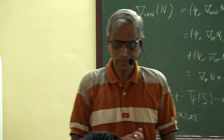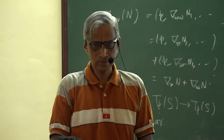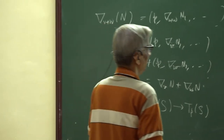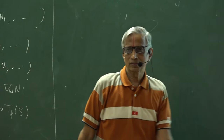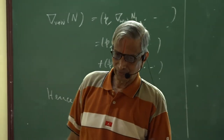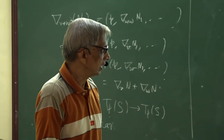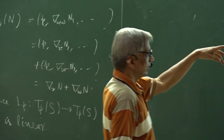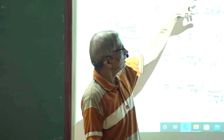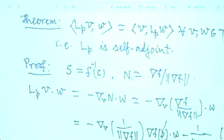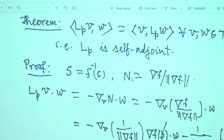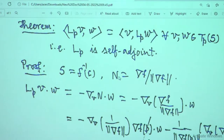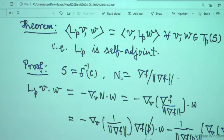On the tangent space at each point of the surface you have a linear map like this. This linear map is self-adjoint or symmetric — since we are in the real case, it just means that the inner product of Lp applied to one vector with another equals the inner product with Lp applied in the other order. This is a straightforward computation.